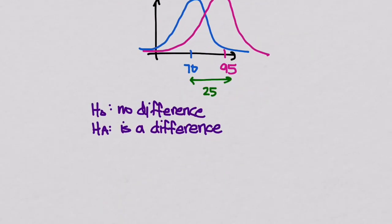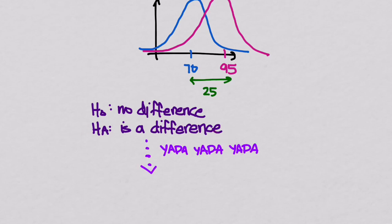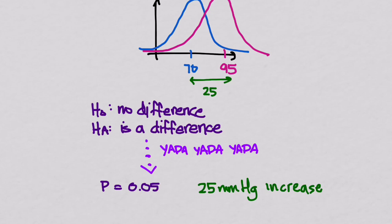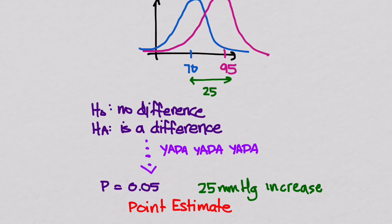We then go through our normal hypothesis testing protocol. We create a null hypothesis that there's no difference, an alternative hypothesis that there is a difference, and we go through the entire process. We find out that the p-value is 0.05, so we say that this is a statistically significant difference — that vasopressor B does increase the blood pressure. We would report this point estimate that we had a 25 mmHg increase in blood pressure using vasopressor B compared to vasopressor A, with a p-value of 0.05, and so it was statistically significant.